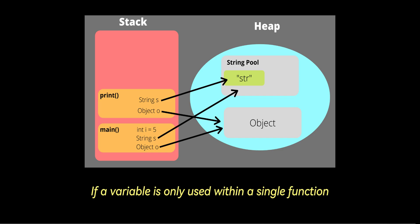If a variable is only used within a single function and does not escape, for example, it's not referenced elsewhere in the program, it can be stack allocated, which is faster and does not require garbage collection.